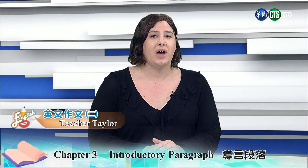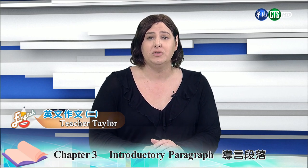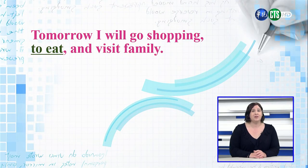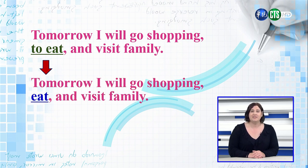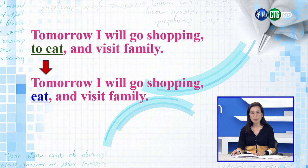The verb 'go shopping,' while two words, is considered one verb which begins with an infinitive verb. 'Visit' is also an infinitive verb and is parallel to 'go shopping.' Both verbs are in their basic form with no endings. But we have a problem with 'to eat,' which is an infinitive verb preceded by 'to.' This is not parallel with the other verbs in the sentence. The correct answer would be: 'Tomorrow I will go shopping, eat and visit family.' 这些句子里面 go shopping 是原型动词开始，to eat 是不定词开始，visit family 又是原型动词开始，为了要一致应该要改成：明天我们将会去购物、吃东西还有拜访家人，都是用原型动词开始。